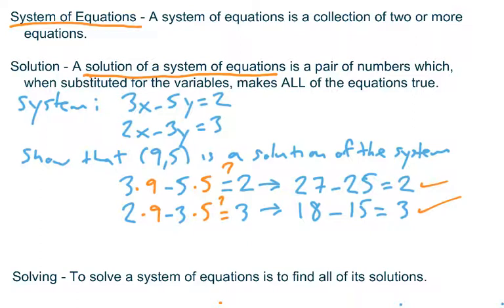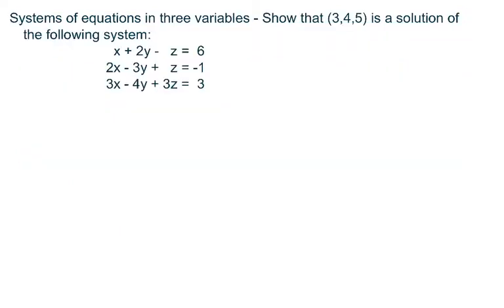Now, much like when we first looked at equations in one variable, we're just sort of picking things out of the air and checking. Obviously, that's pretty inefficient. So we're going to look at some procedures whereby we can find these solutions. And the magic word we're going to use is solving. To solve an equation, to solve a system of equations, is to find all of its solutions. So find a way to figure out that (9, 5) was an ordered pair that was going to work.